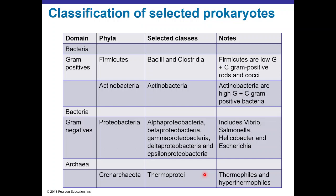Here's a table showing a summary of the domains Bacteria and Archaea. Within Bacteria, we have a subclassification according to phyla and selected classes. For gram positives, we have two different phyla: Firmicutes and Actinobacteria. Firmicutes have selected classes like Bacilli and Clostridia, while Actinobacteria's selected class is Actinobacteria itself. One difference between them is GC content — Firmicutes have low G and C content while Actinobacteria has high G and C content.